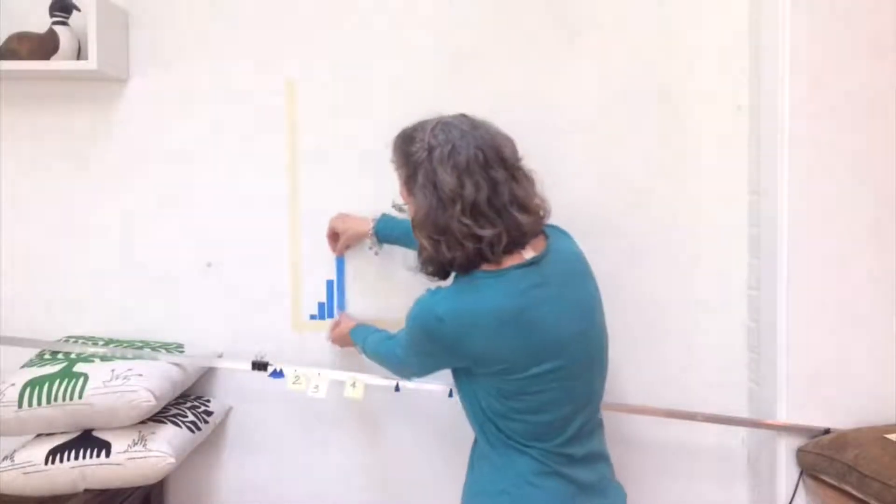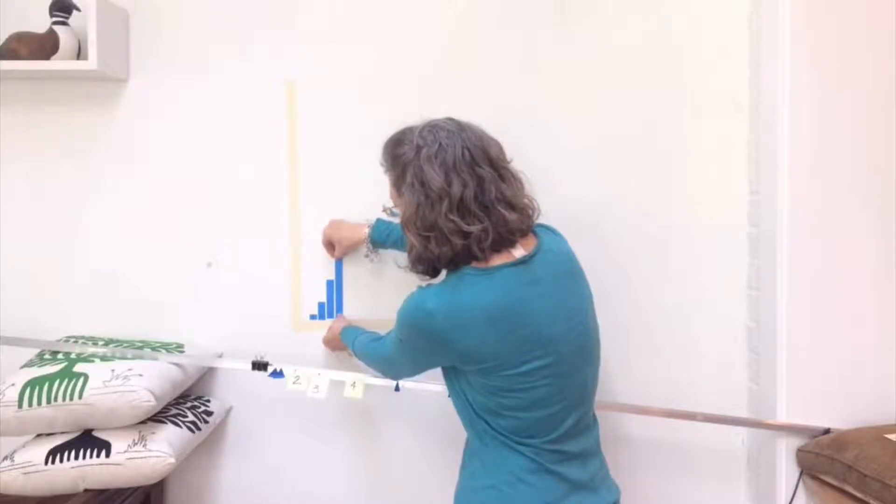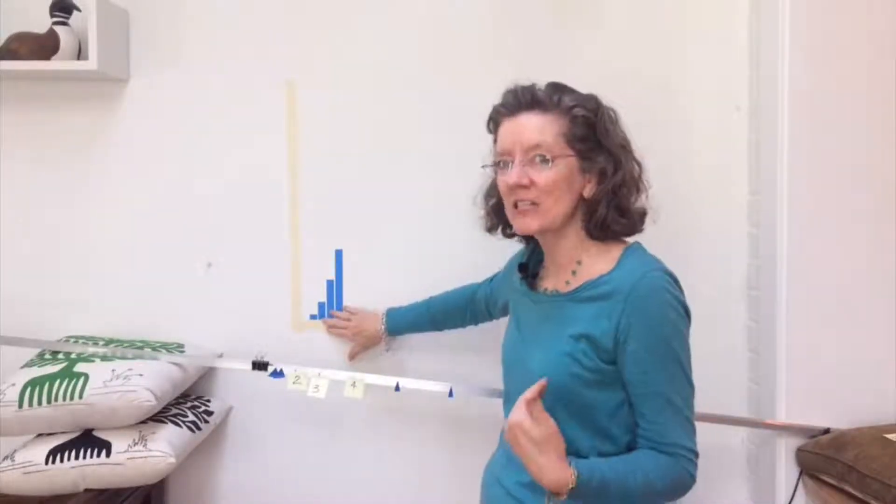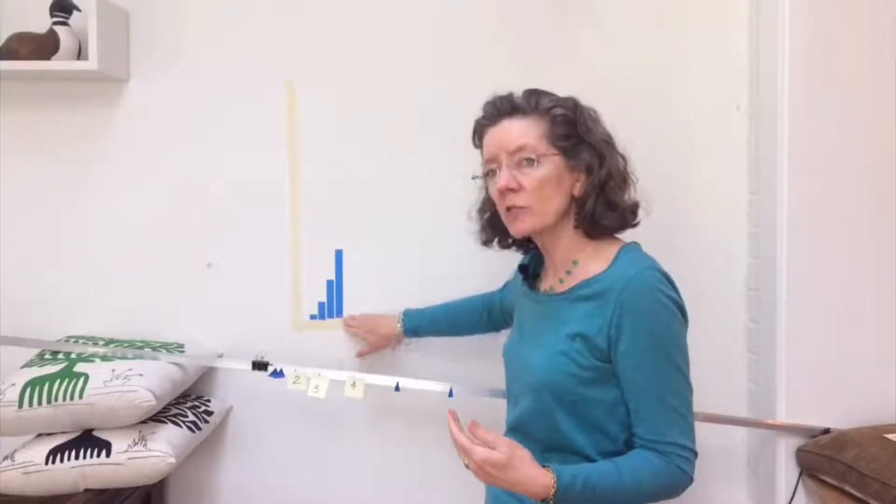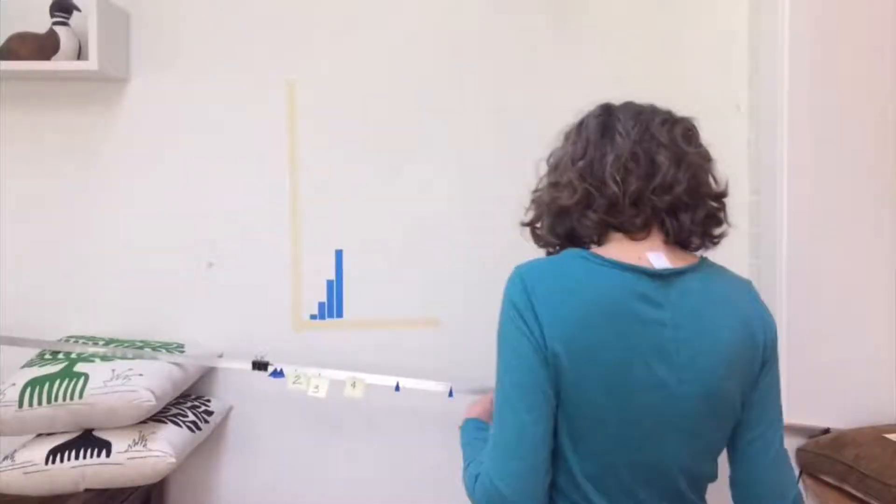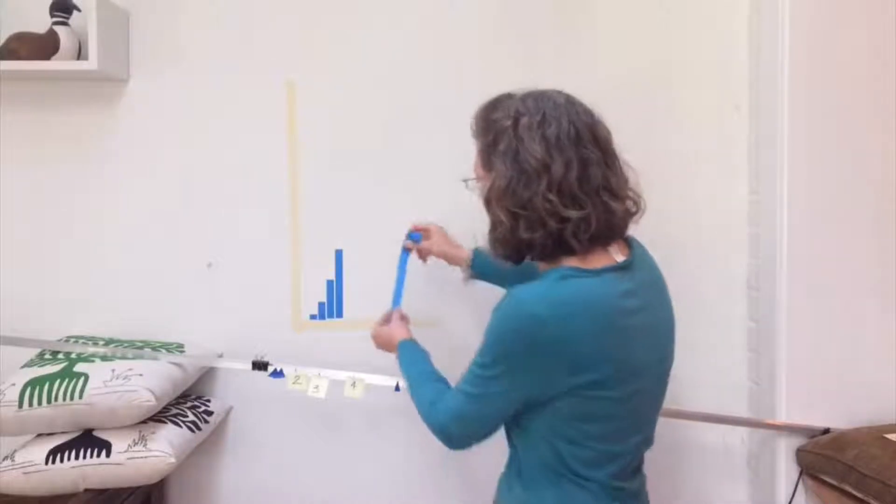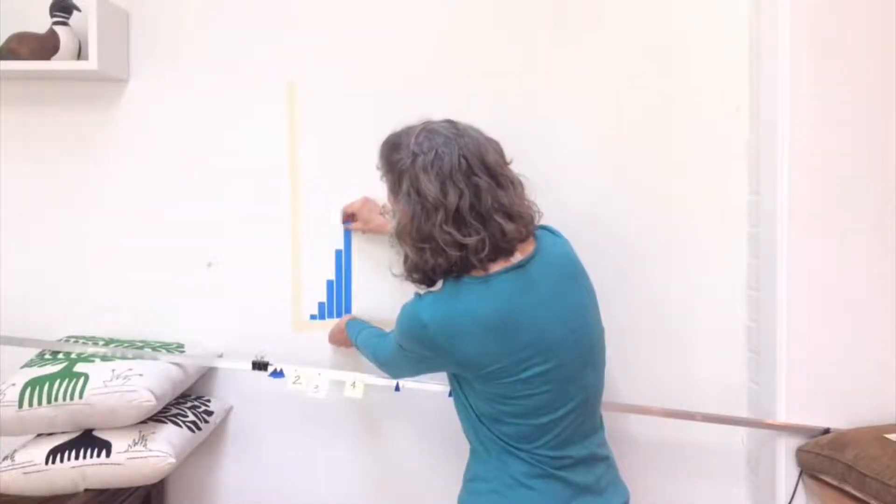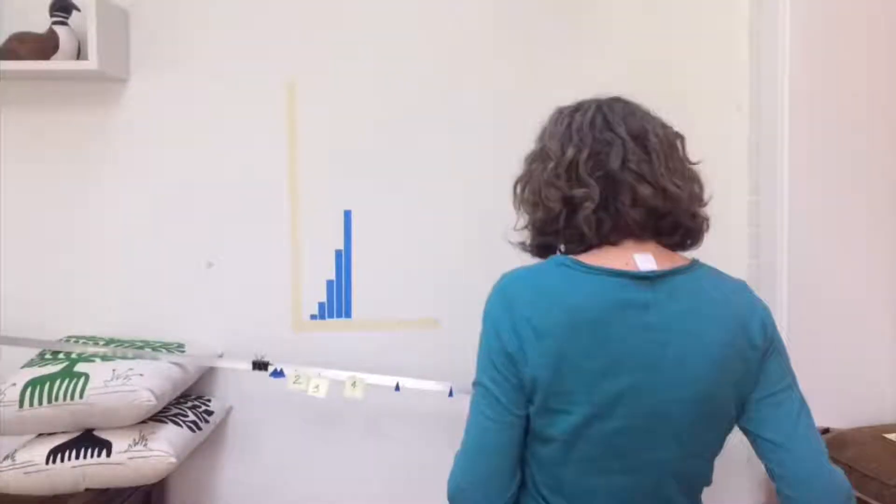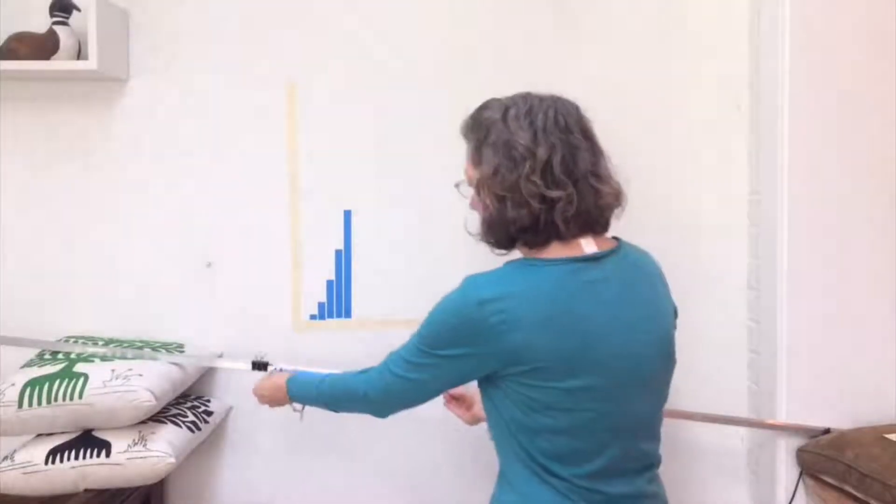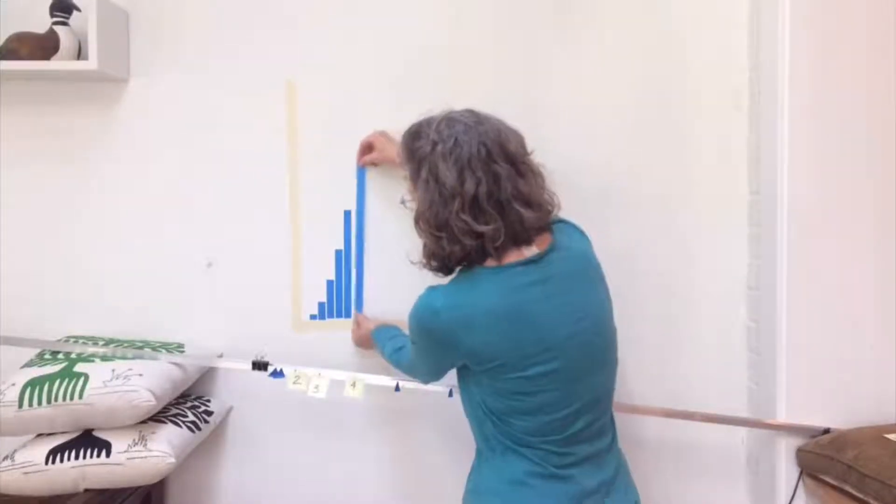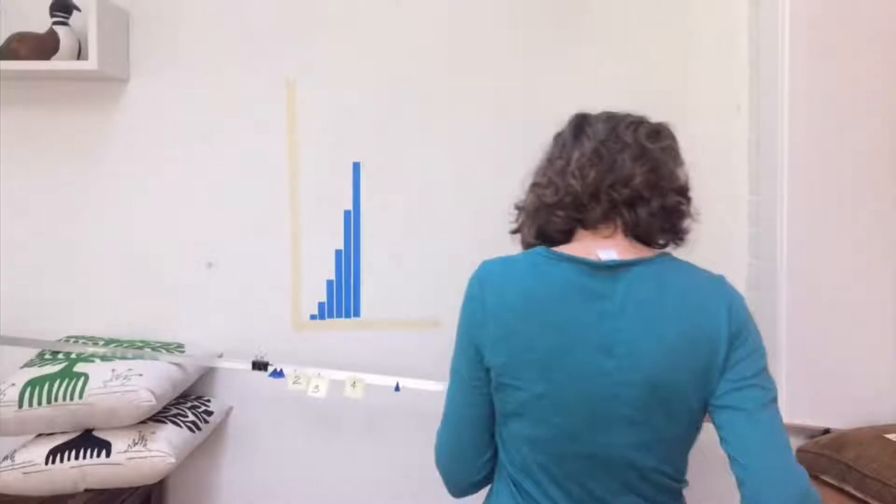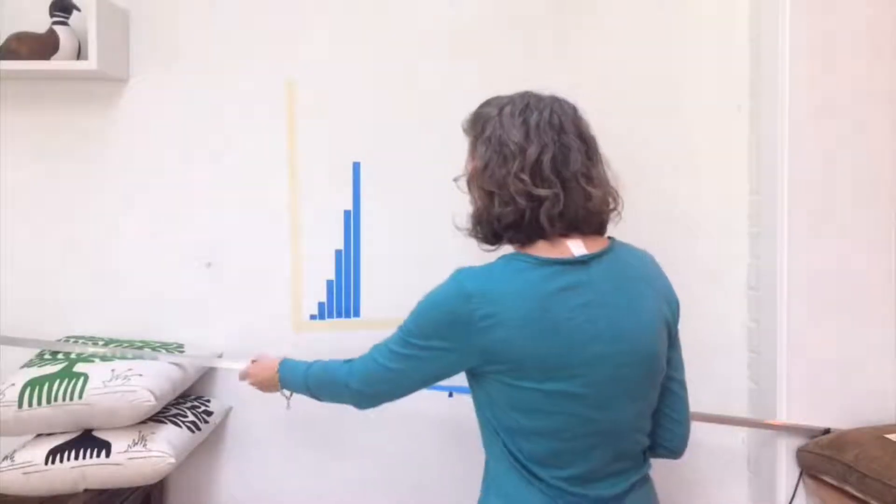Here's the four. It doesn't really matter how far apart I space them, as long as it's even. Because these are measuring even amounts of time. So the amount of time isn't as important as the fact that the time is even. Okay? There's five. And that's six. And I think we can fit seven here.